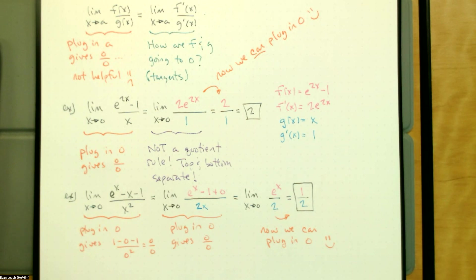We're looking at the derivative — we're looking at the direction, thinking about tangent lines of the numerator and denominator, and looking at the ratio of the slopes of those tangent lines. This is based on approximating functions with lines.